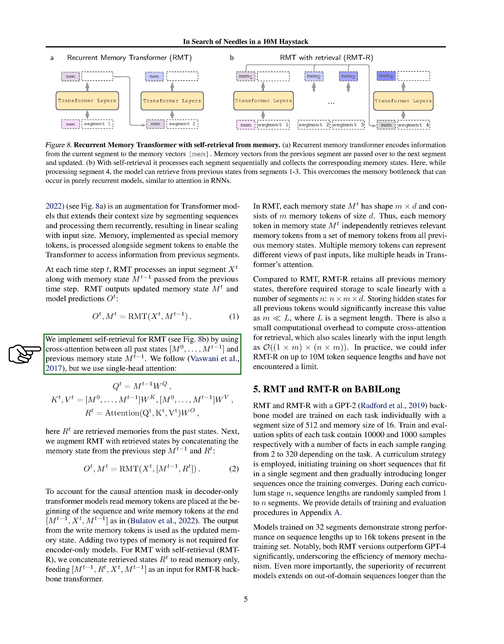In our enhanced version of RMT, which includes self-retrieval (RMTR), we add the retrieved states only to the read memory. This means the input for the RMTR consists of the previous memory state, the retrieved states, and the current segment, in that order. Each memory state in RMT is made up of multiple memory tokens, allowing the model to represent different aspects of past inputs, similar to how multiple heads work in transformer attention mechanisms.